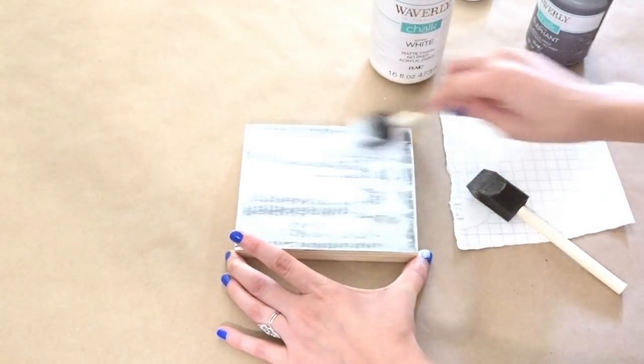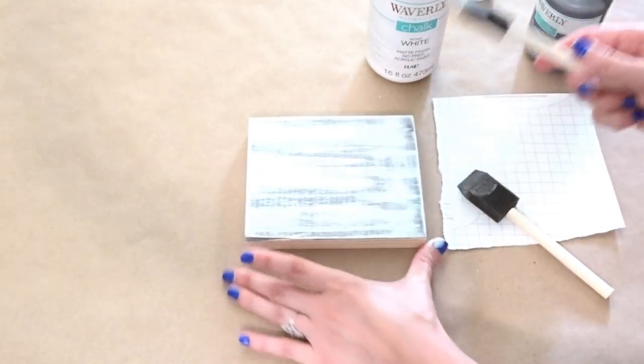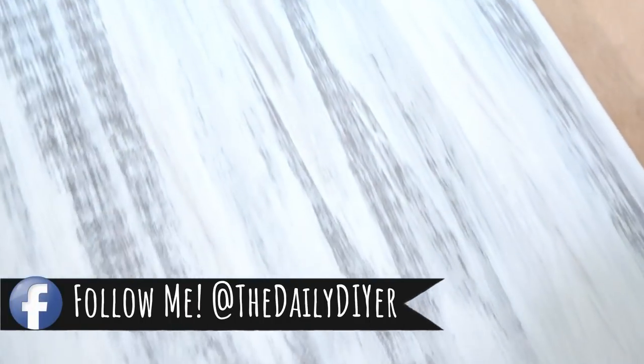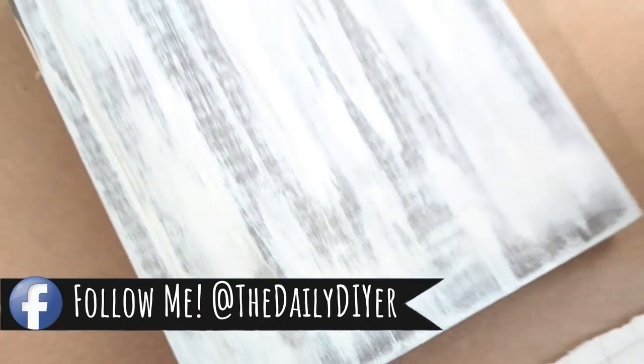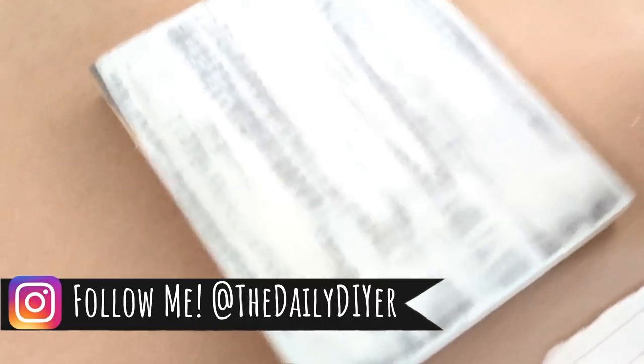So once you have it to your desired look, that is all there is to it. So here's a closeup look of this weathered look with chalk paint. You can do this for the background of wood signs. You can do this to furniture. Anything you want to kind of give that weathered look to.